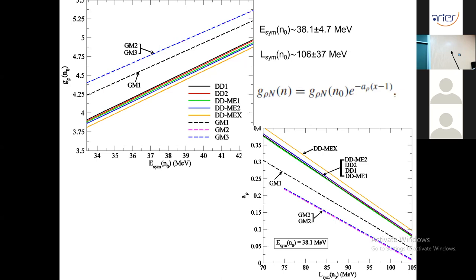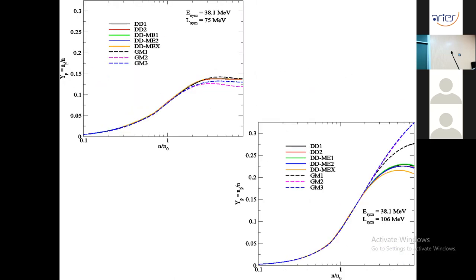The parameterizations compatible with the new higher range of e-sim and l-sim will be stiffer than existing parameterizations. Consequently, the abundances of different isospin projections change and the proton fraction increases with larger values of l-sim. The proton fraction is shown for different equations of state at two values of l-sim: 75 MeV and 106 MeV. The proton fraction is important in the context of neutron star cooling.